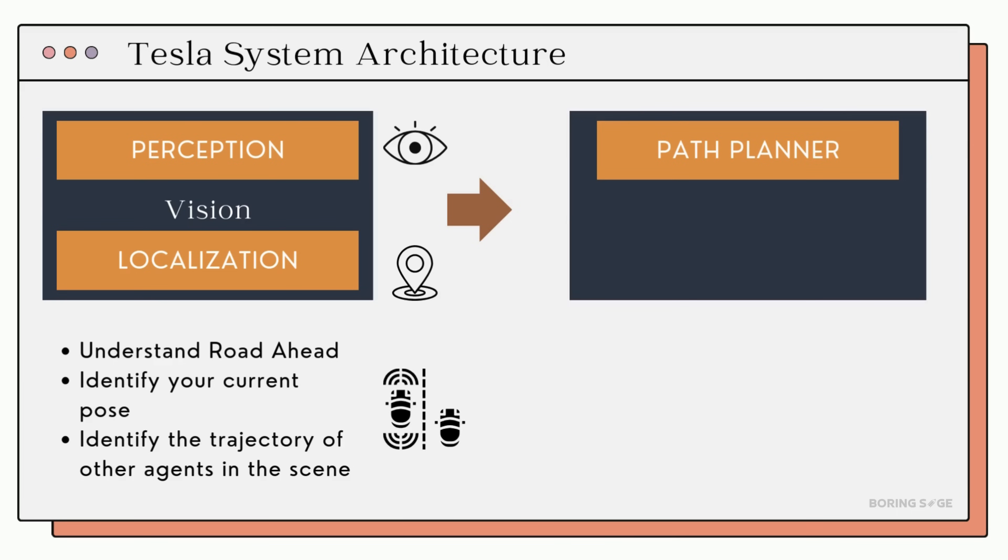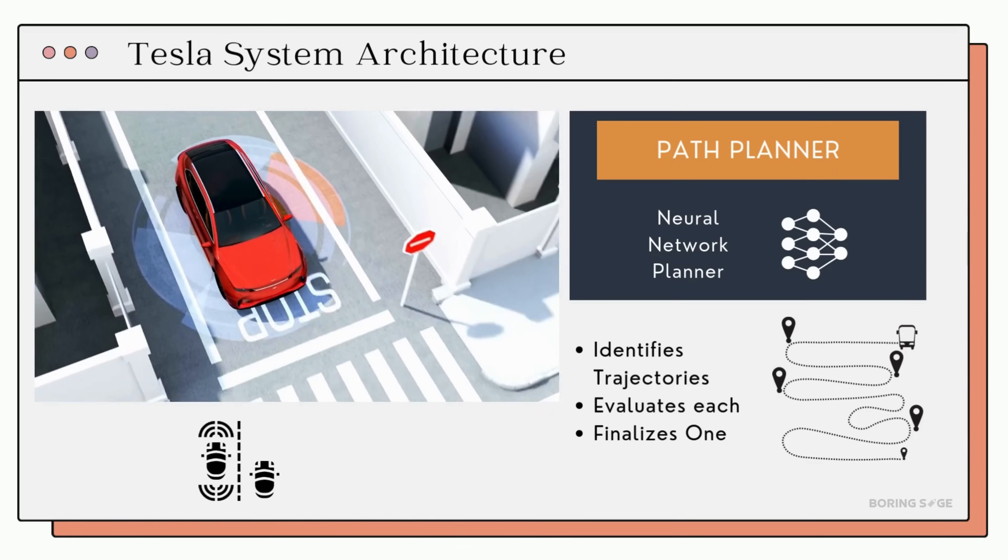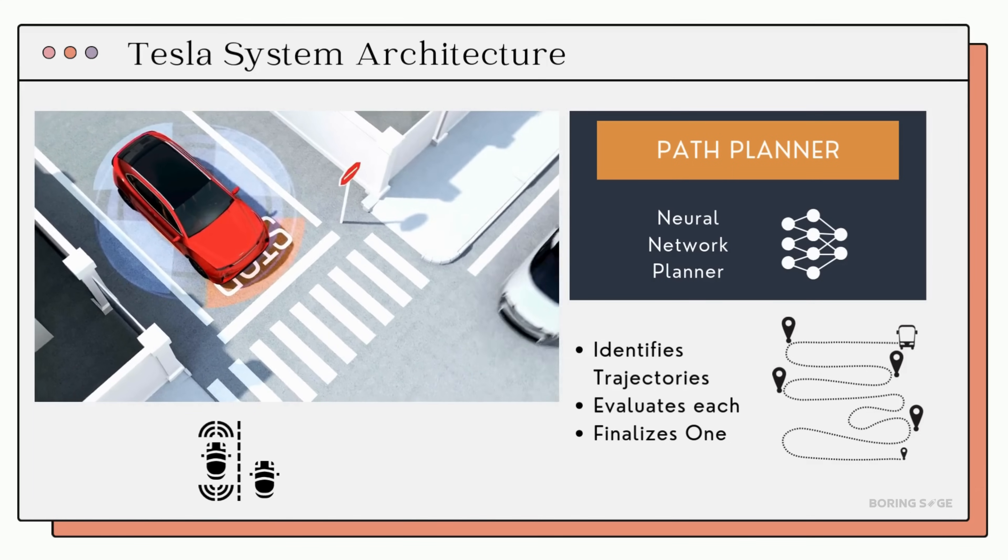Now that Tesla's FSD system has a clear 3D view, it feeds the data into the path planning module. This module uses neural networks to calculate the best route for the car based on its current location, destination, and the environment. The system can predict the paths of other vehicles and determine the safest, most efficient route to follow.